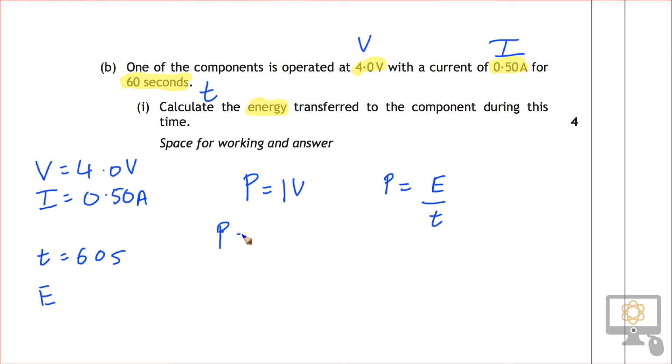So over here power is equal to the current 0.5 times the voltage of 4. That gives us a power of 2.0 watts.